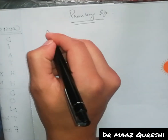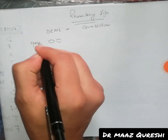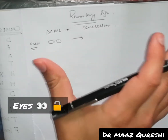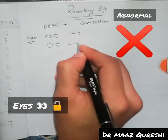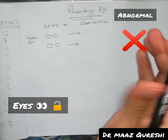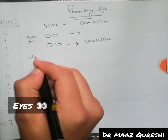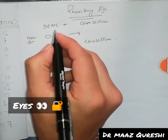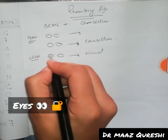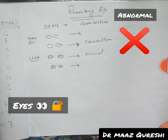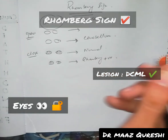The Romberg test involves the contributions of the DCML pathway and the cerebellum. If the eyes are open and the person is standing upright with no problem, that is normal. If the eyes are open and the person falls to one side, the lesion is in the cerebellum. When the eyes are closed, the cerebellum is no longer compensating — so if the person falls with eyes closed, that is a lesion in the Dorsal Column Medial Lemniscus, and this is called Romberg positive.